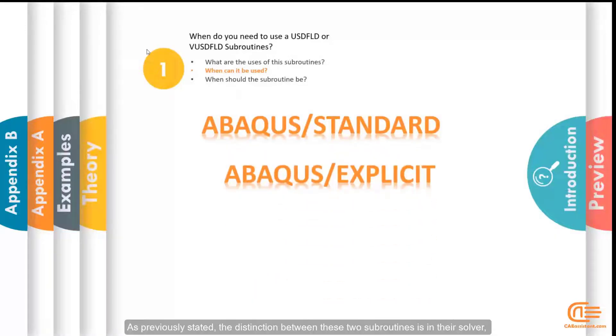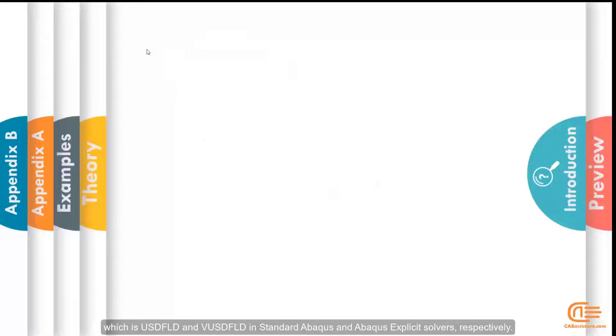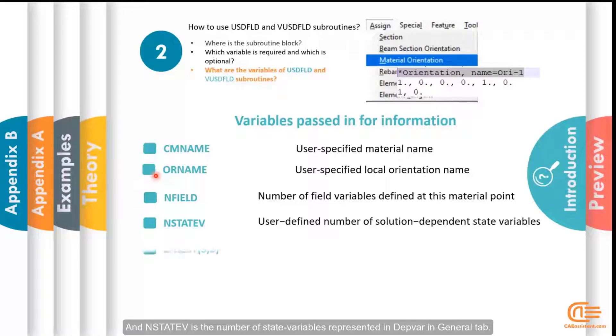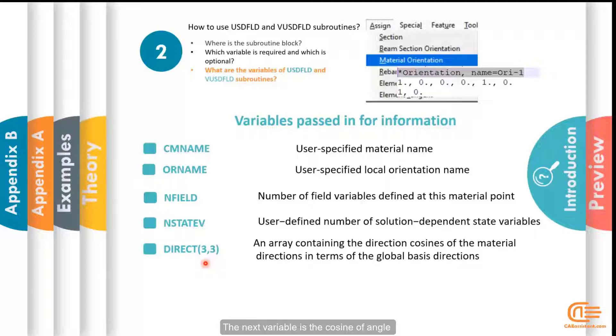As previously said, the distinction between these two subroutines is their solver, which is USDFLD and VUSDFLD in a standard Abaqus and Abaqus explicit solver respectively. The next variable is the cosine of angle between the direction of the material with respect to the general coordinate system.